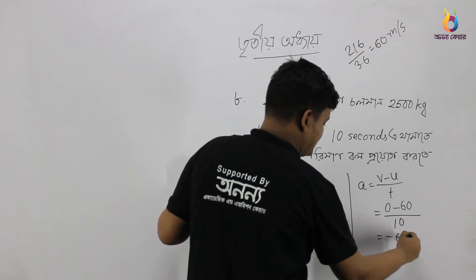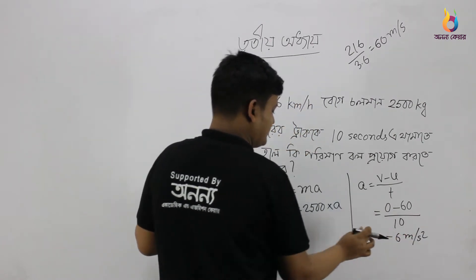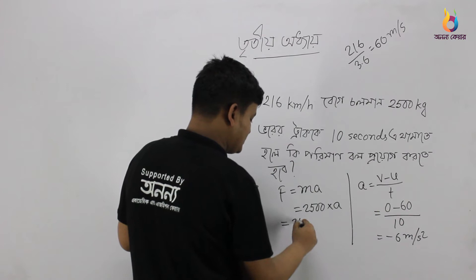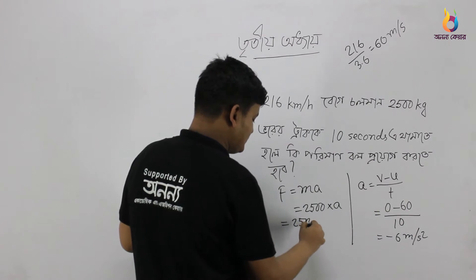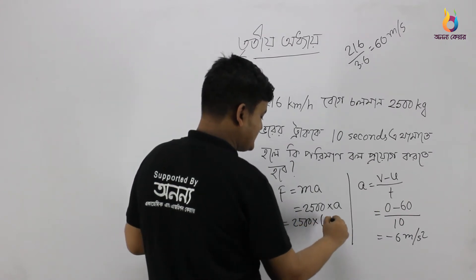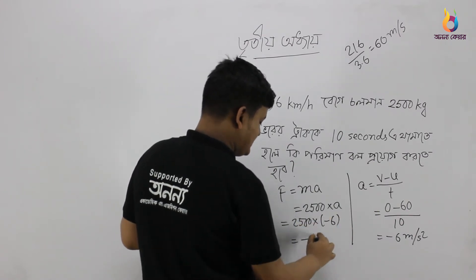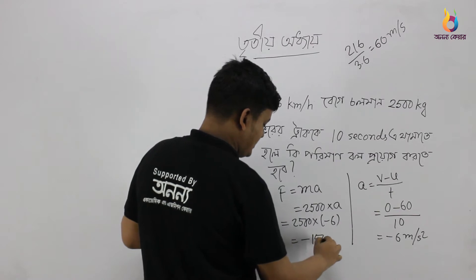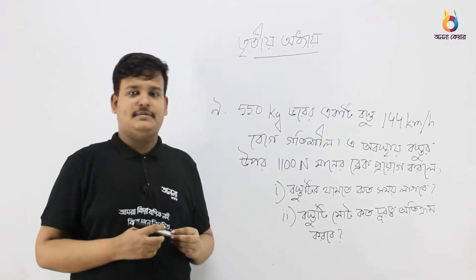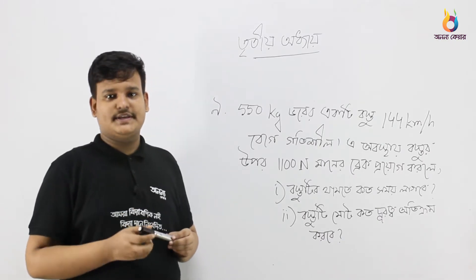The acceleration value is minus 6 meters per second squared. So F equals mass into acceleration: 2500 into minus 6 is equal to minus 15,000 Newton. That completes this mathematical problem.